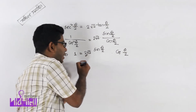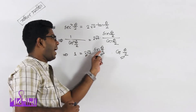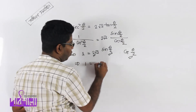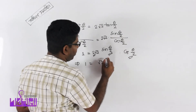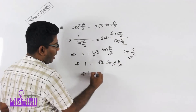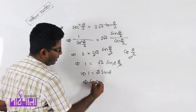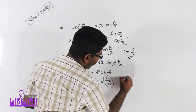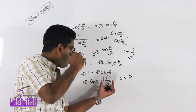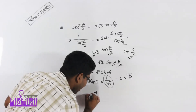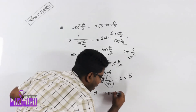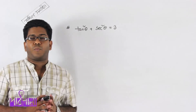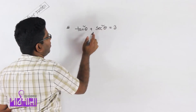We see that 2 sin(θ/2) cos(θ/2) equals sin θ, so the expression simplifies to root 2 sin θ equal to 1. Therefore sin θ equal to 1/√2, and 1/√2 equals sin(π/4). So sin θ equal to sin α, giving θ equal to nπ plus minus (−1)^n into π/4, n belongs to Z.